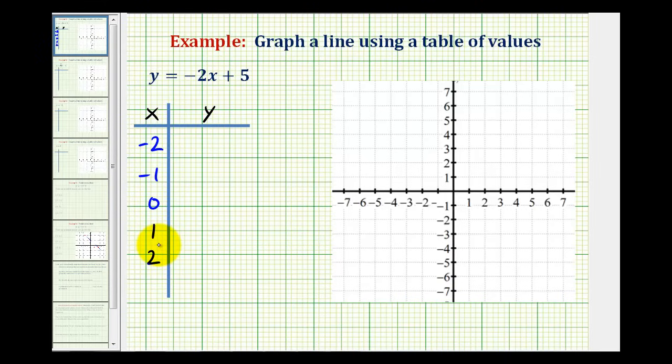Now it does only take two points to graph a line, but we should always find at least three points. That way if the three points don't form a line, we know we've made an error. So for each of these x values, we'll perform substitution for x and then determine y.